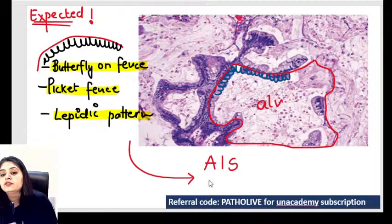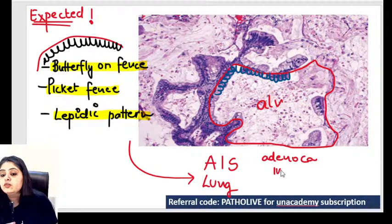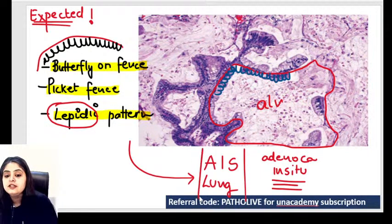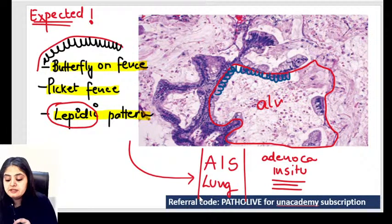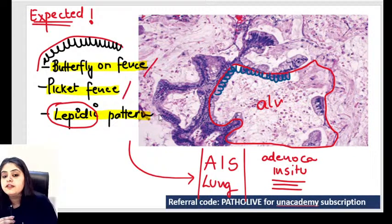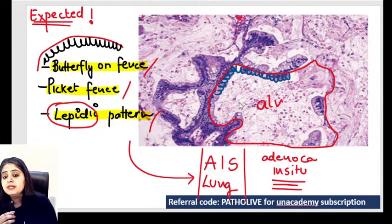The tumor is adenocarcinoma in situ (AIS) of the lung — a precancerous condition. If they ask about lepidic type of adenocarcinoma or lepidic type of lung cancer, the answer is AIS. The three names are: picket fence, butterfly on fence, or lepidic pattern.